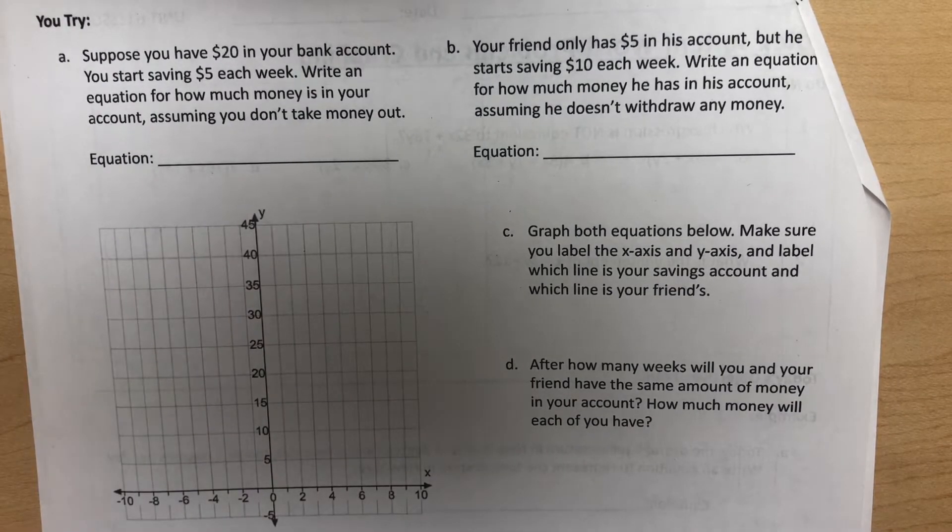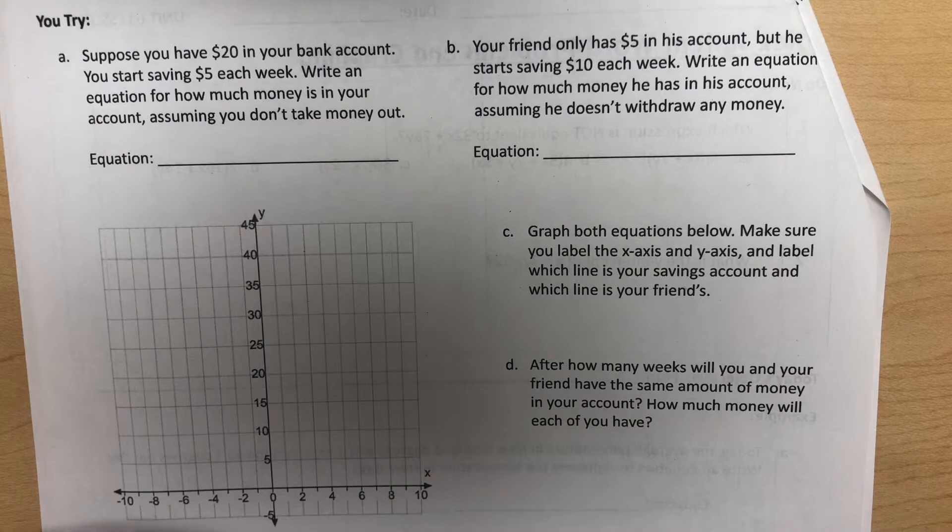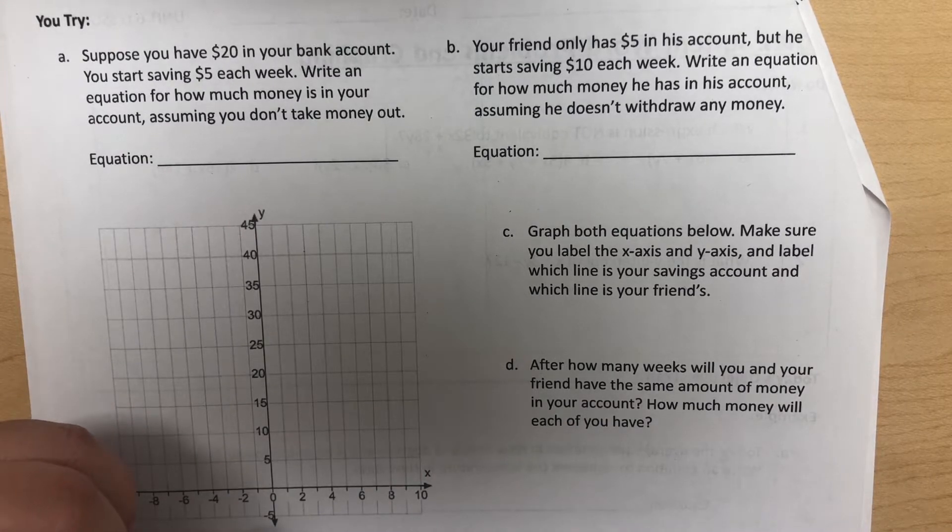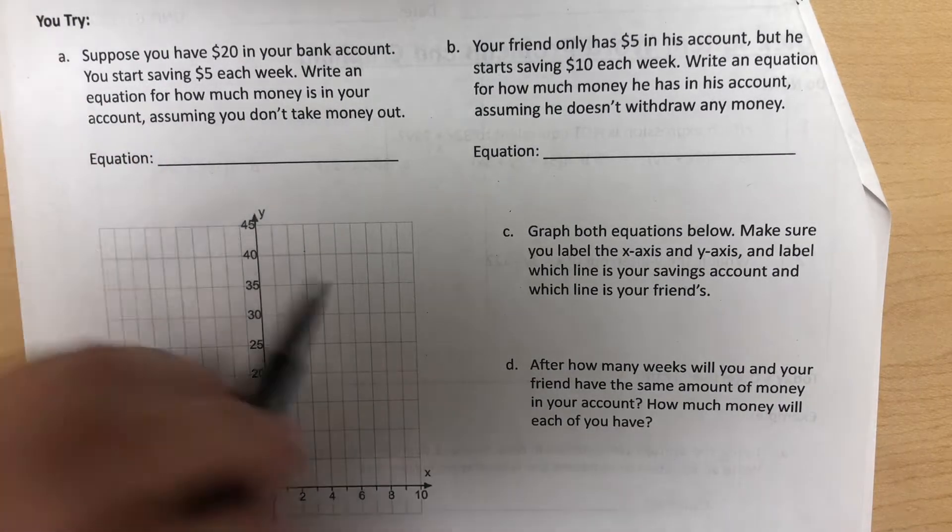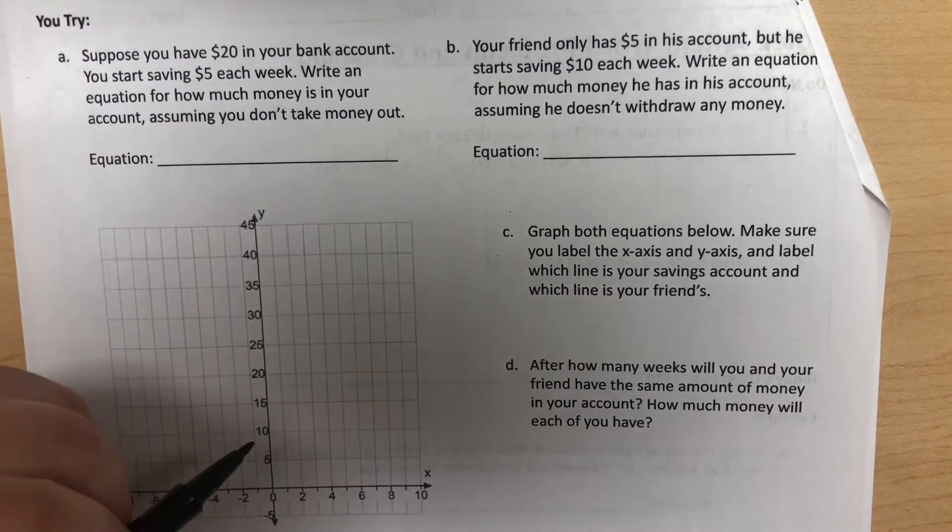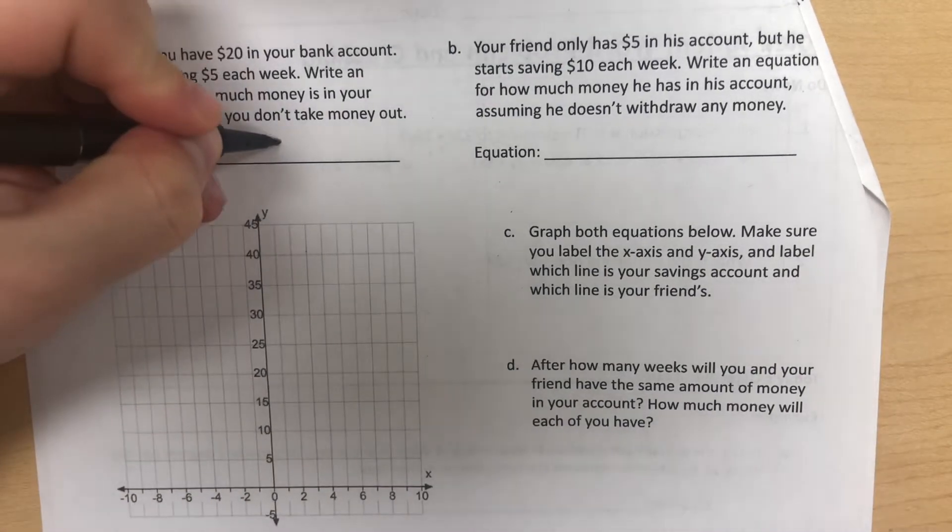I'll start back here with the equation for this first one. It says, suppose you have $20 in your bank account. You start saving $5 each week. Write an equation for how much money is in your account, assuming you don't take money out. So at this point they had said, well, $20 is the starting amount, so that would be our y-intercept.